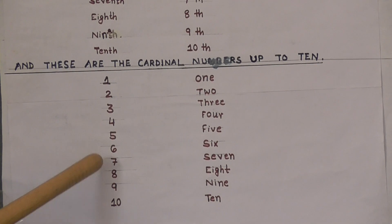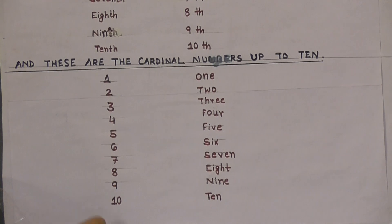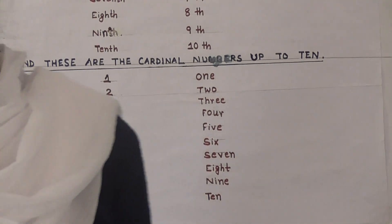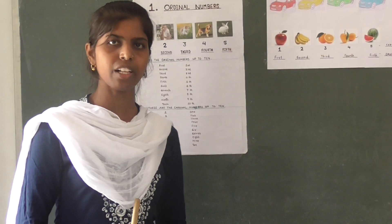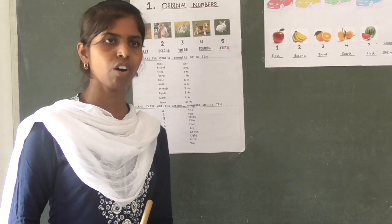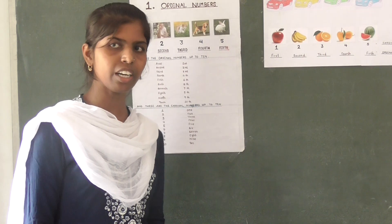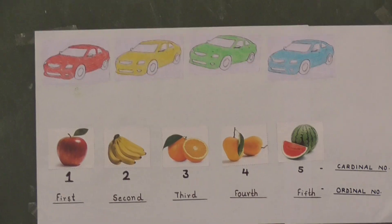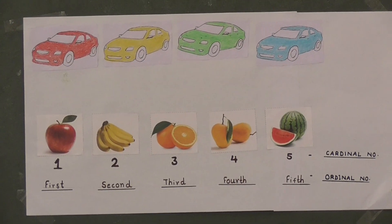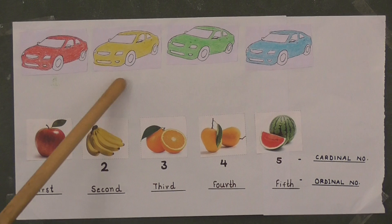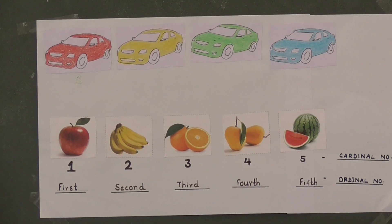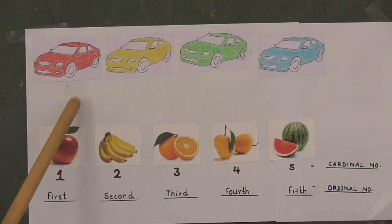Children, let us see some more examples to learn the concept of Ordinal Numbers and Cardinal Numbers. Children, can you tell me how many cards are there in total? There are 4 cards.